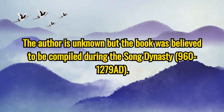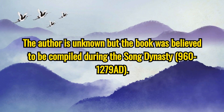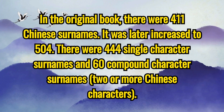The author is unknown, but the book was believed to be compiled during the Song Dynasty. In the original book, there were 411 Chinese surnames. It was later increased to 504 — 444 single-character surnames and 60 compound-character surnames.